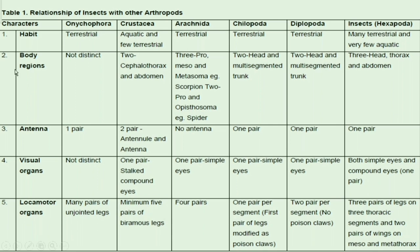Regarding body regions: Onycophora body regions are not distinct. Crustacea has two body regions — cephalothorax and abdomen. Arachnida has three body regions — prosoma, mesosoma, and metasoma (e.g., scorpion has prosoma and opisthosoma; spider has two). Chilopoda and Diplopoda body is divided into head and multi-segmented trunk. Insects have three body parts — head, thorax, and abdomen.